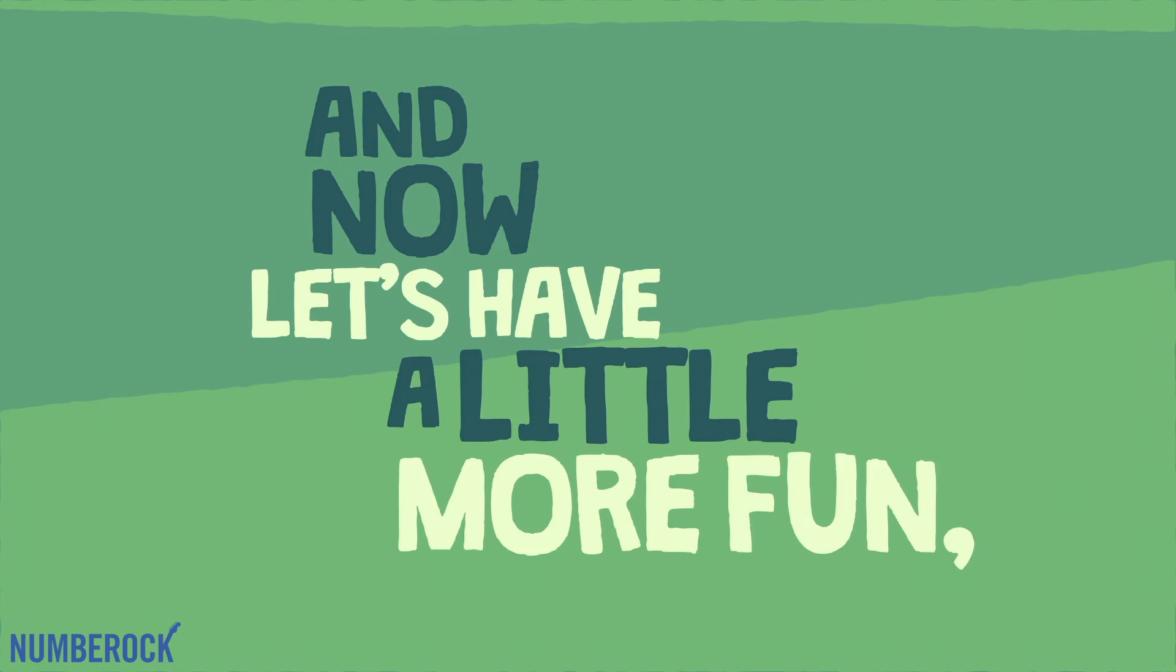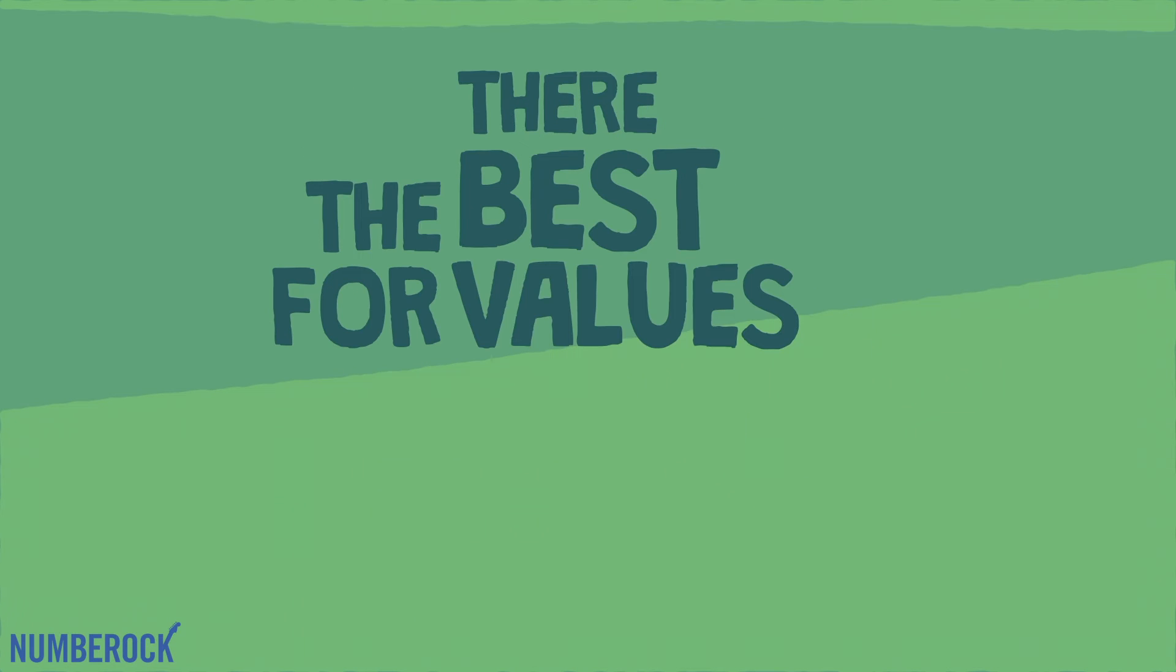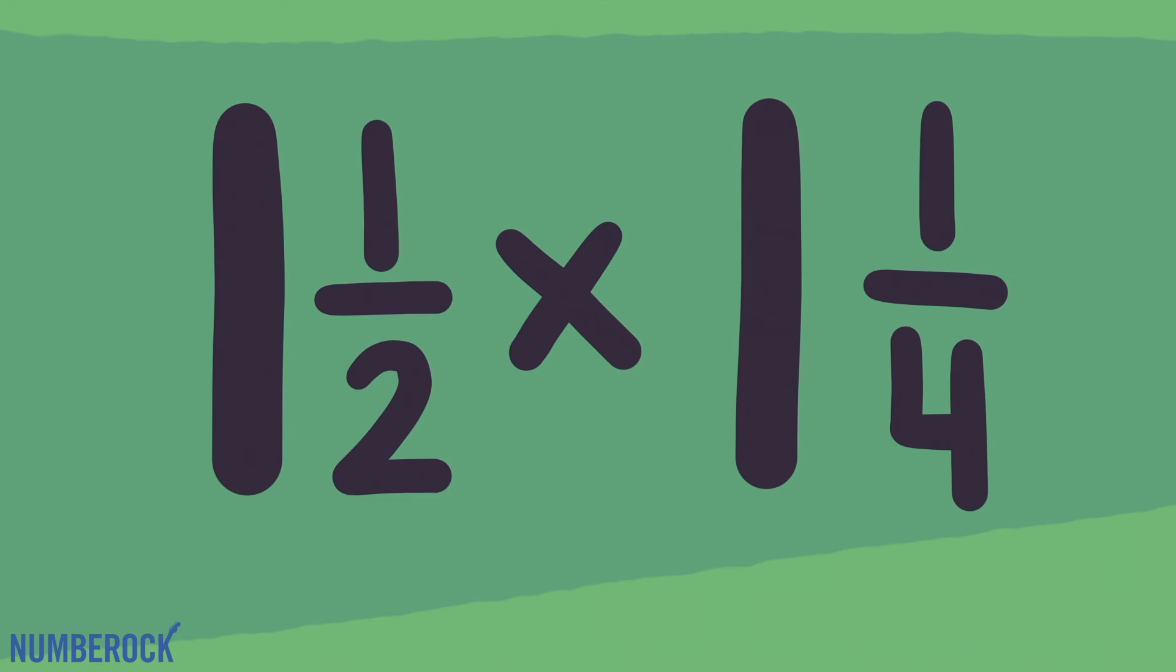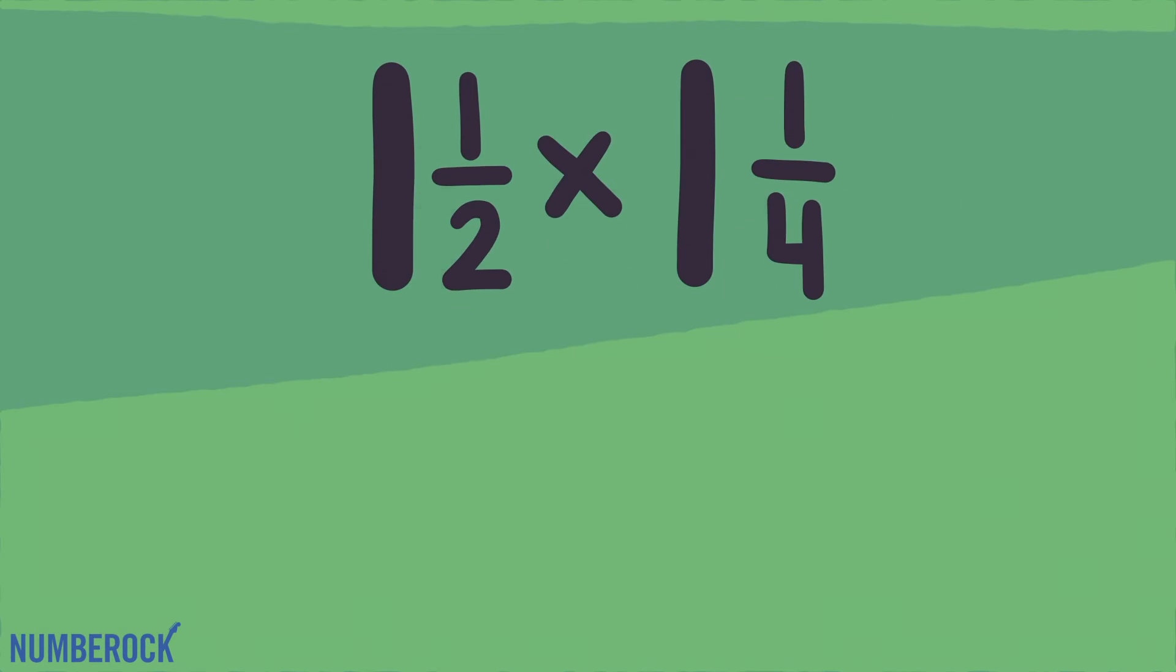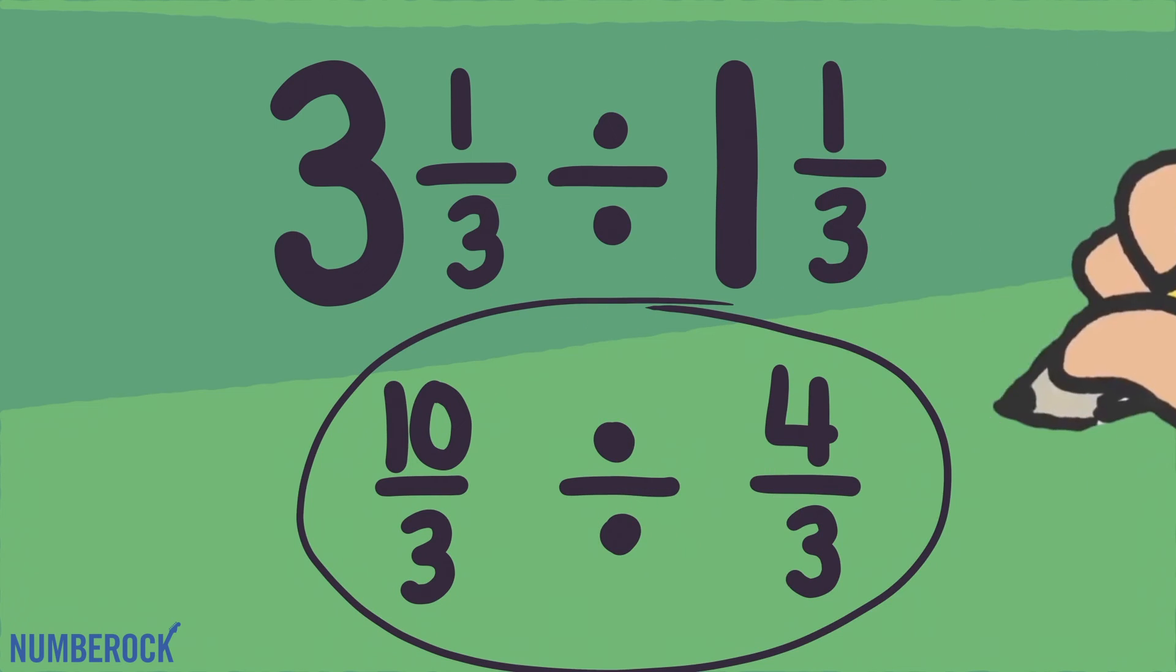And now let's have a little more fun describing why we might want an improper fraction. They're the best for values getting multiplied. Improper fractions are also easier to divide. Just look at 1 and 1 half times 1 and 1 fourth. 3 halves times 5 fourths is easier of course. Or dividing 3 and 1 third by 1 and 1 third is harder than dividing 10 thirds by 4 thirds.